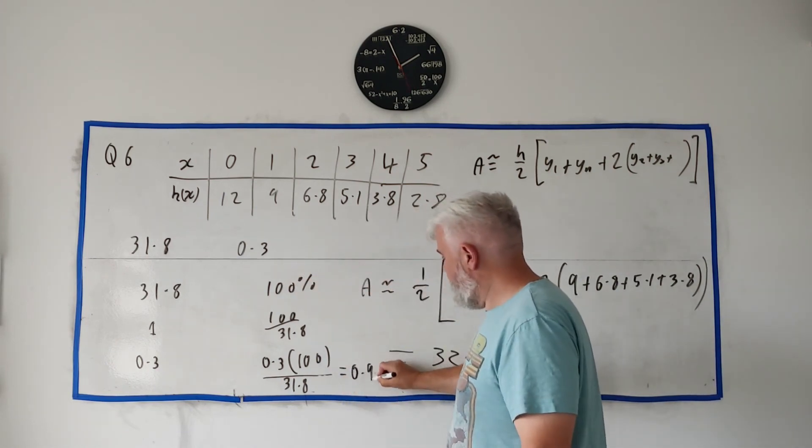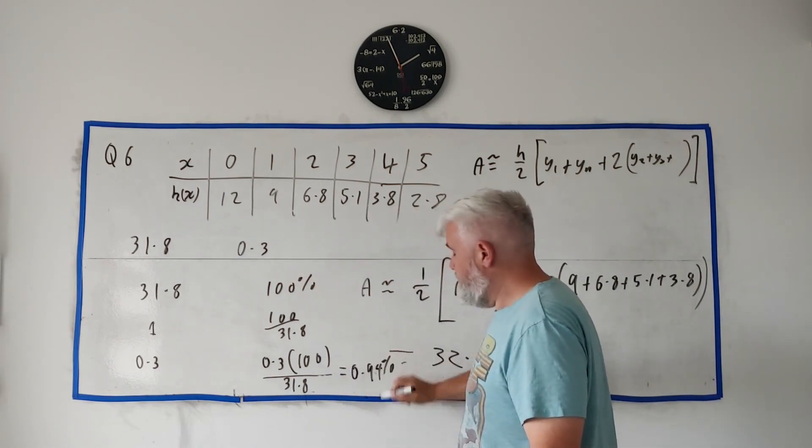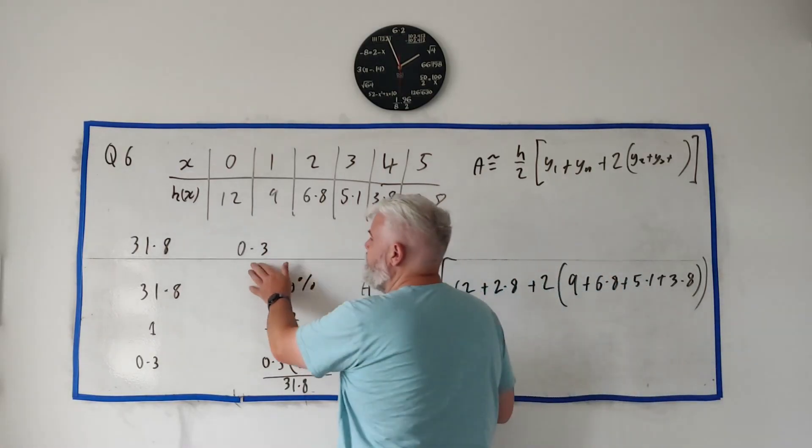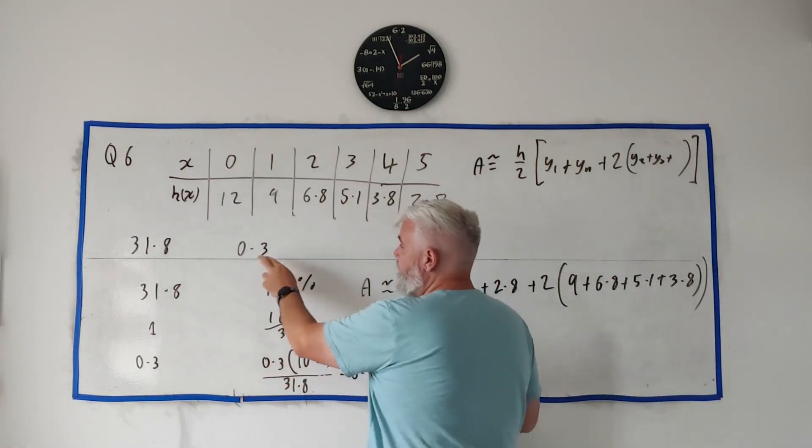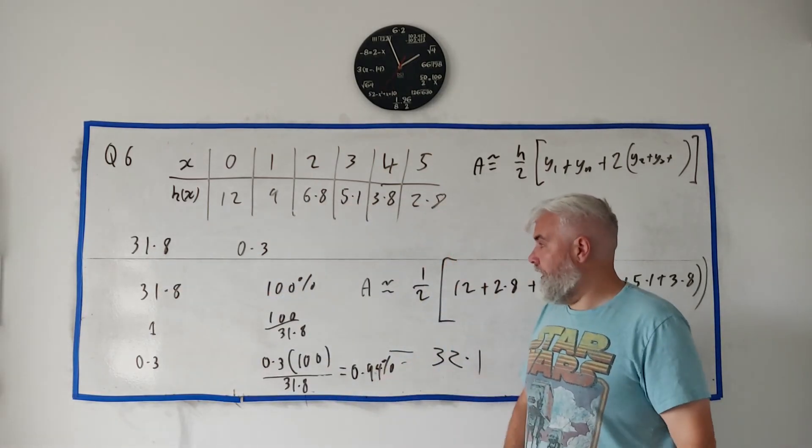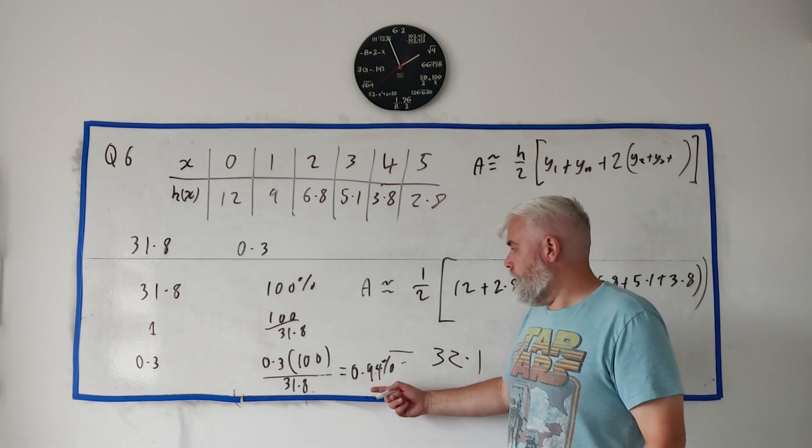And we get 0.94 percent. That's the percentage error. By the way, a lot quicker, you could have also just taken this, divided by that, and multiplied by a hundred, then you would have got the same answer.